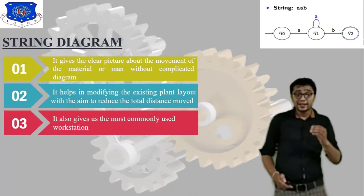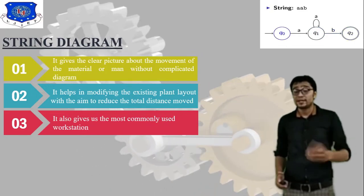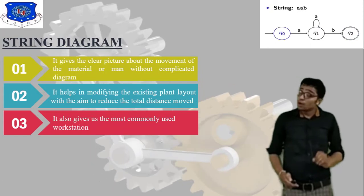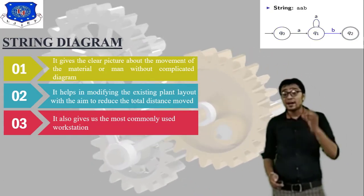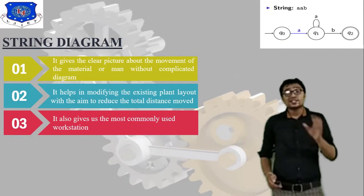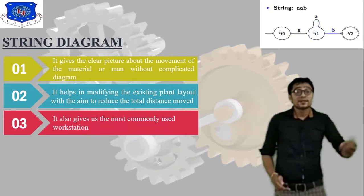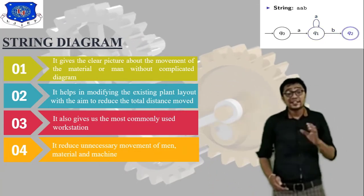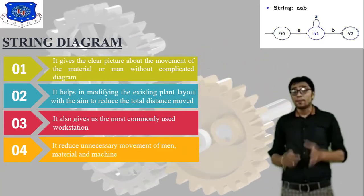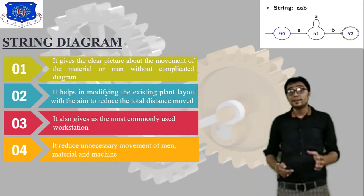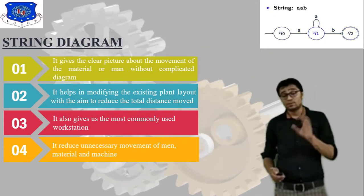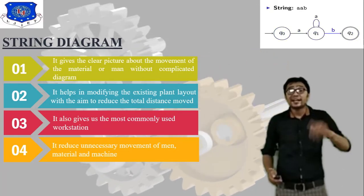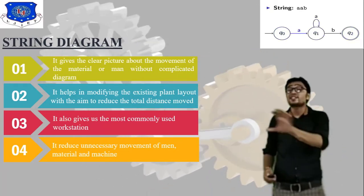The string diagram also gives us the most economical or most commonly used workstation. A workstation is related to a group of machines. It also reduces unnecessary movement of man, material, and machine, because the goal is to help in modifying the existing plant layout.